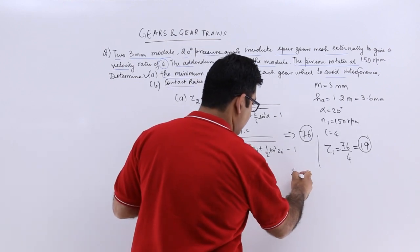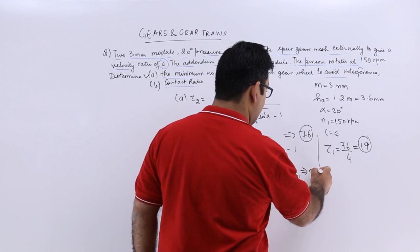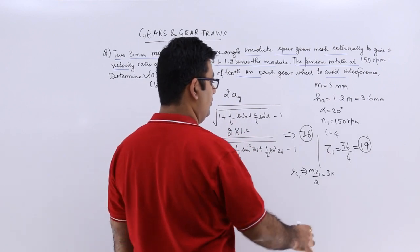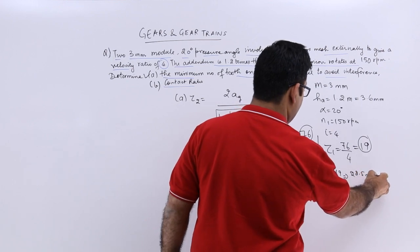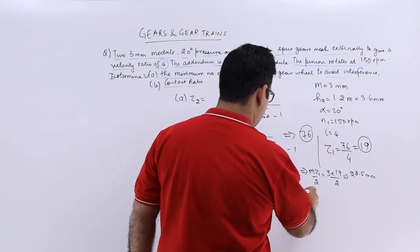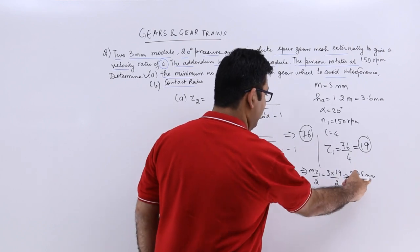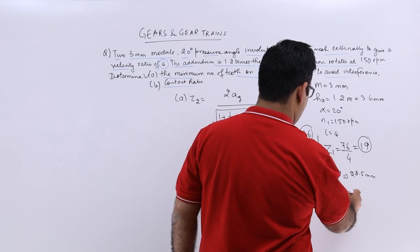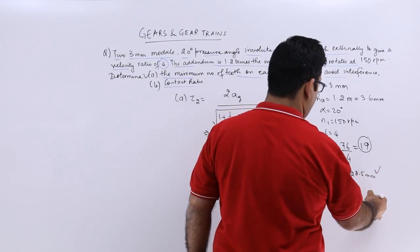The pitch circle radius for pinion is R1 which would be module into z1 by 2, so this becomes 3 into 19 by 2, it becomes 28.5 millimeters. You multiply that by 4, you get R2 which is M into z2 by 2, so 28.5 into 4 would give you approximately 114 millimeters.